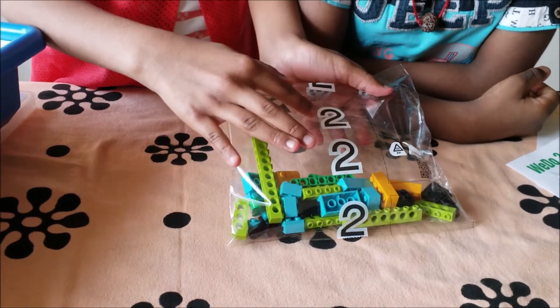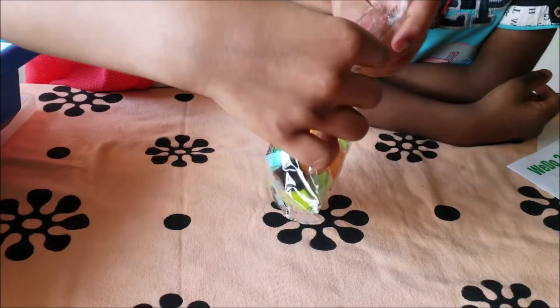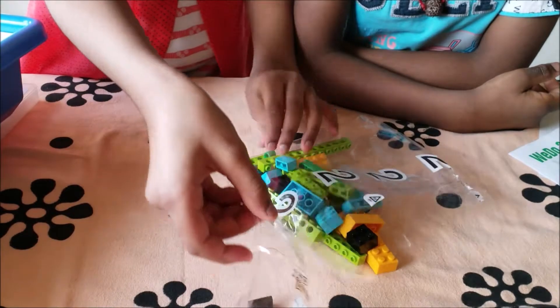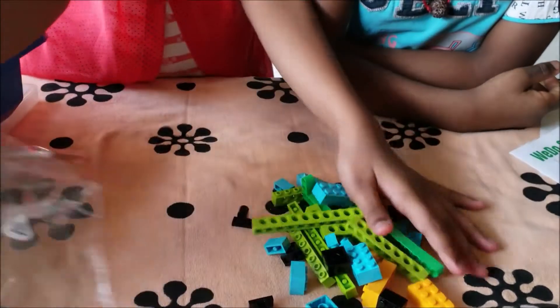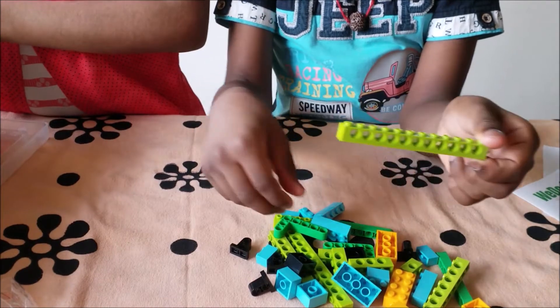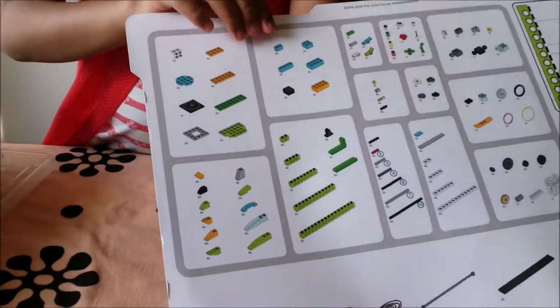This is labeled as 2, so we organize it for box number 2. Let's open the pack. These are the pieces. These are so cool. They have so many holes. Do you see it?